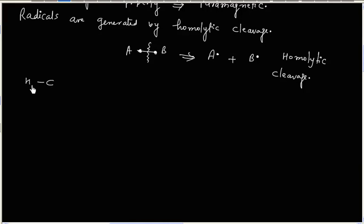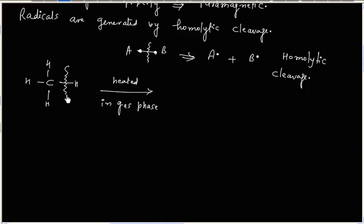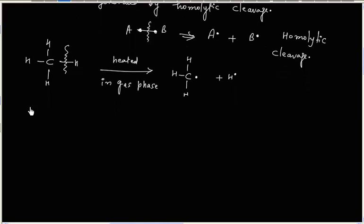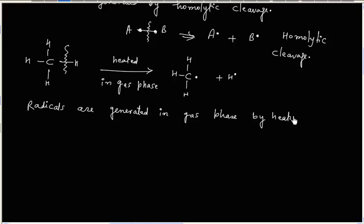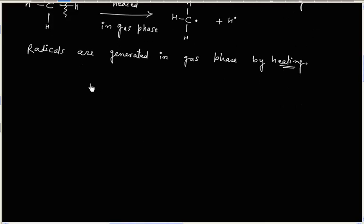For example, if we have a CH4 molecule and it is heated in gas phase, the carbon-hydrogen bond can break and generate a radical. Generally, radicals are generated in gas phase by heating, where homolytic cleavage takes place. In solution, heterolytic cleavage takes place, which can generate a carbocation or a carbanion.